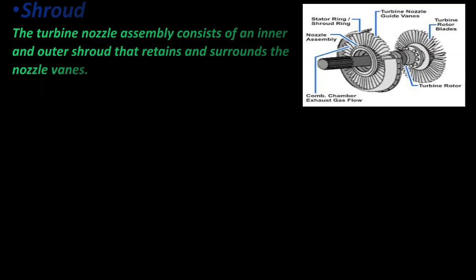The next one is shroud. Now you can see in this picture the stator ring and shroud rings that surround the turbine nozzle guide vane. That is, the turbine nozzle assembly consists of an inner and outer shroud that retain and surround the nozzle vane. Also, the actual element might vary slightly in their configuration and construction.